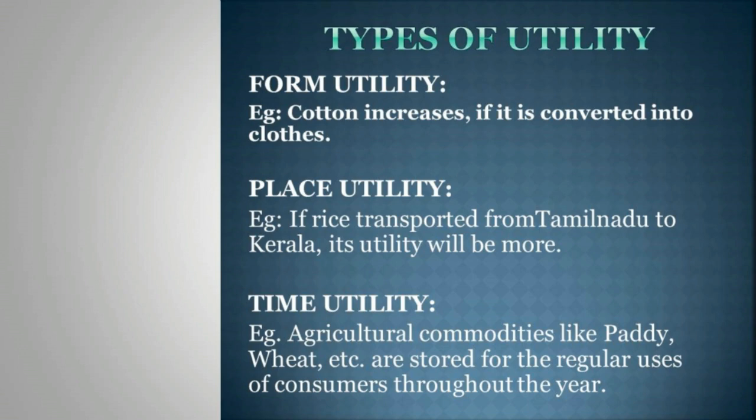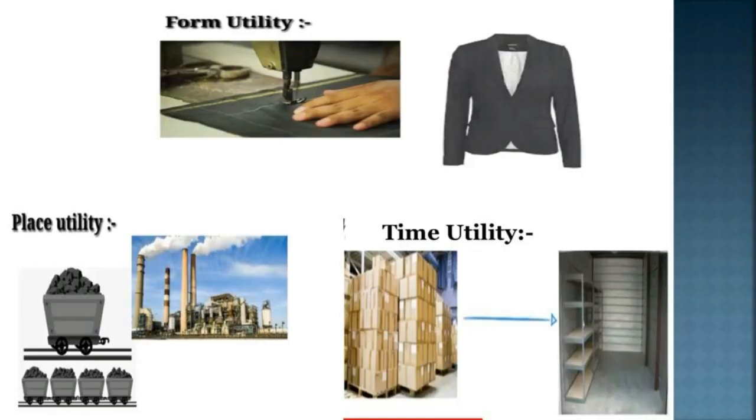Types of utility. Form utility: if the physical form of a commodity is changed, its utility may increase. Example: cotton increases in utility if it is converted into cloth. Place utility: if a commodity is transported from one place to another, its utility may increase. For example, if rice is transported from Tamil Nadu to Kerala, its utility will be more. Time utility: if a commodity is stored for future usage, its utility may increase. For example, agricultural commodities like paddy and wheat are stored for regular use by consumers throughout the year.